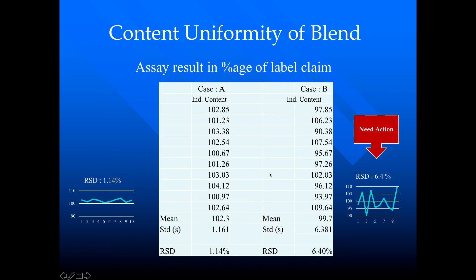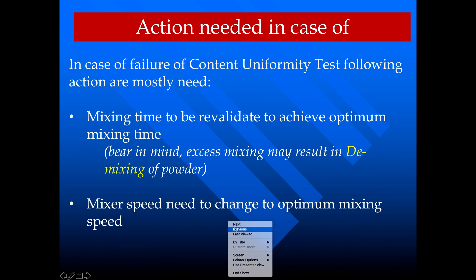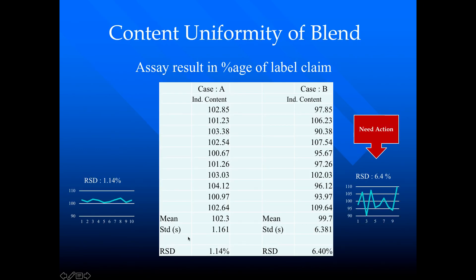Now let's do some calculations. In Case A, we have 10 different assay results from 10 different locations. The mean of the assay is 102.3% and the standard deviation is 1.161. Calculating the RSD — standard deviation divided by mean value multiplied by 100 — gives an RSD of 1.14%.